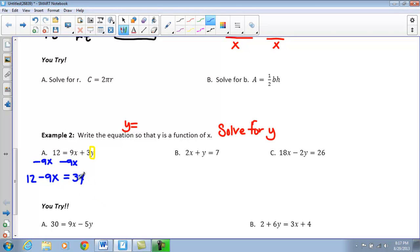So, I have 12 minus 9X equals 3Y. I want to get this Y by itself still. So, I am going to go ahead and divide both sides by three. And when I do that, I need to make sure that I divide this by three and that by three. So, I have 4 minus 3X equals Y.